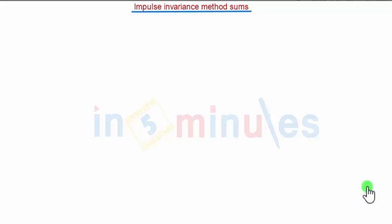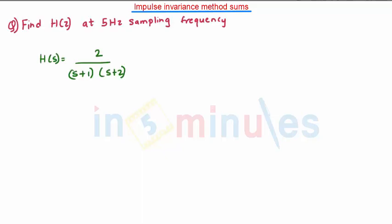Hello everyone. Welcome to In5Minutes. In this video we are going to solve some sums that are based on the impulse invariance method. First we will see the question: find H(z) at 5 Hertz sampling frequency from H(s), where H(s) is equal to 2 divided by (s+1)(s+2). H(s) is the analog transfer function.